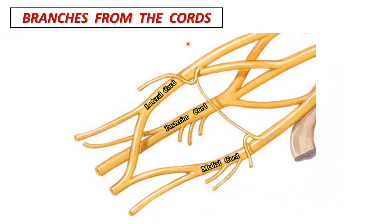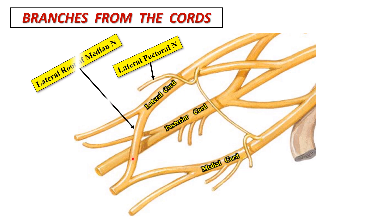Branches from the cords: the lateral cord branches are the lateral pectoral nerve, the lateral root of the median nerve, and it continues as the musculocutaneous nerve.